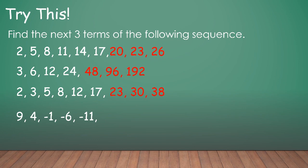Let's have the next one: 9, 4, negative 1, negative 6, negative 11. So what will be the next 3 terms? That will give us negative 16, negative 21, negative 26. So you're actually subtracting 5. So notice that you can have different rules or pattern on your sequence. You can have operations such as addition, multiplication, subtraction, division, and you can actually have a combination of operations.